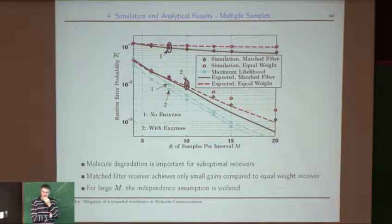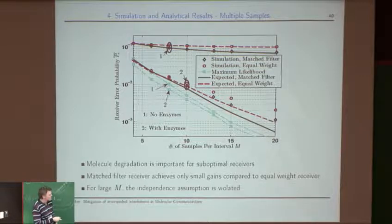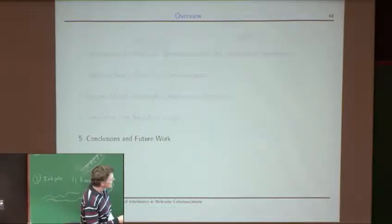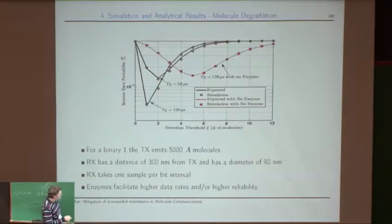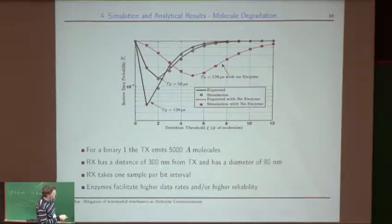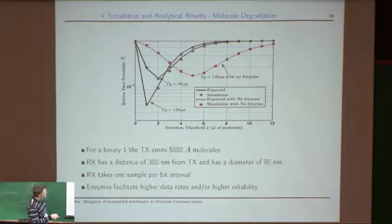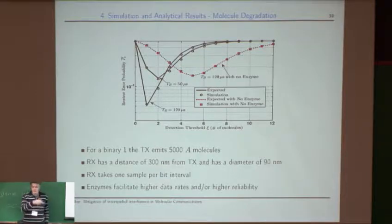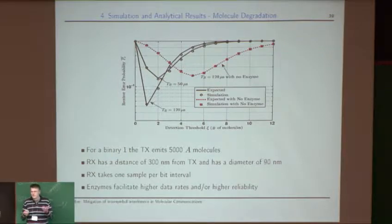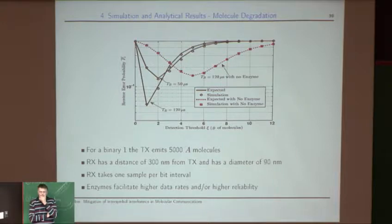Final question: What are the system dimensions? The distance is 300 nanometers; the diffusion parameters are based on typical values for blood at body temperature. Papers are available with full parameter details.